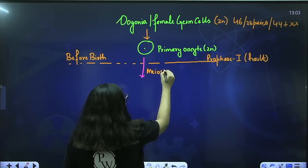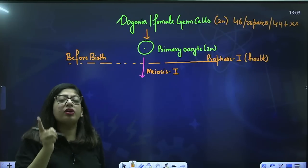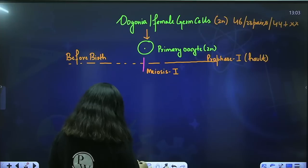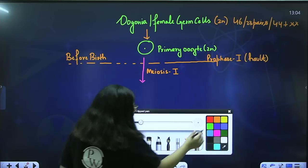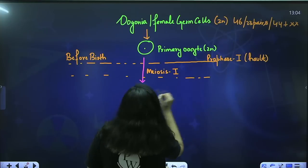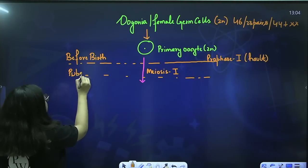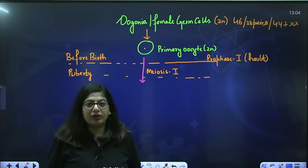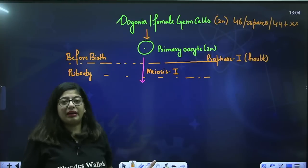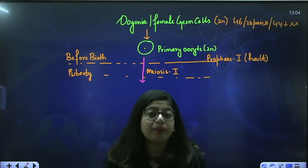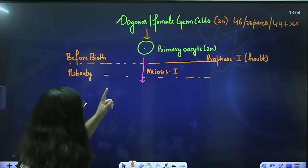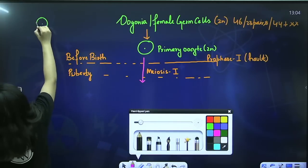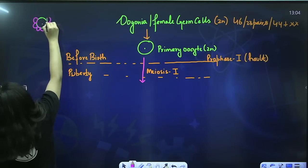Meiosis I has been started before birth but got stuck at prophase I. Now when female puberty is reached, she will have a rush of hormones. Also importantly, this primary oocyte is never alone — unlike in males where the primary spermatocyte is alone. In females, the primary oocyte is surrounded by a number of cells, and this forms a follicle.